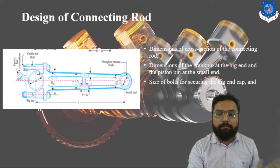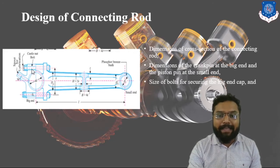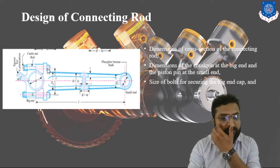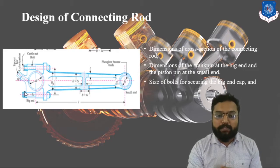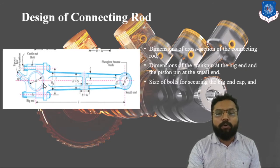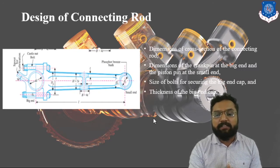The big end is mainly disconnected — there are multiple parts. One is its cap, separated by a separating line, which is called the big end cap. The bolts here are subjected to shear stress, as we have previously discussed. The big end is subjected to bending stress, and the small end is subjected to bending stress and crushing stress. After this, we will design the thickness of the big end cap.